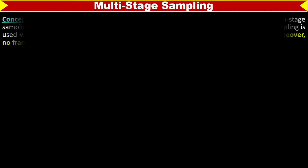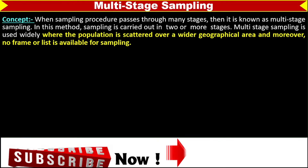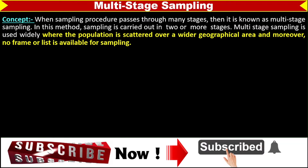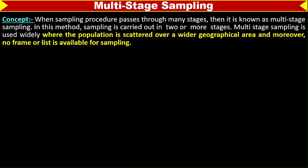Multi-stage sampling. When a sampling procedure passes through many stages, it is known as multi-stage sampling. In this method, sampling is carried out in two or more stages. Multi-stage sampling is widely used where the population is scattered over a wide geographical area and moreover no frame or list is available for sampling. Multi-stage sampling is a procedure in which we sample in different stages.